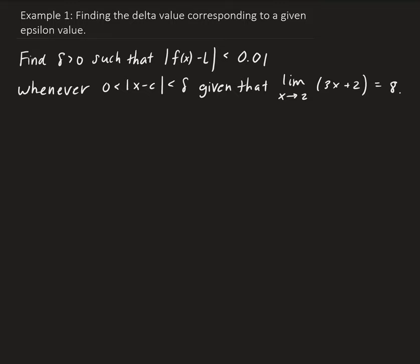In this example, we want to find the specific delta value such that the absolute value of the distance between f of x and L is going to be strictly less than 0.01, whenever we have the condition that the absolute value of x minus c is less than delta, given that the limit of 3x plus 2 as x approaches 2 is equal to 8.